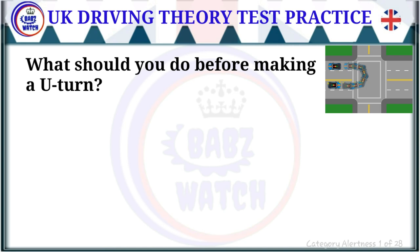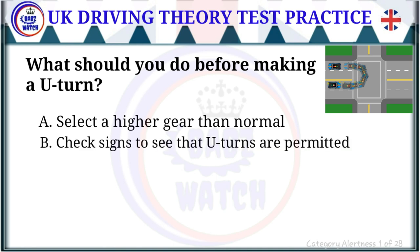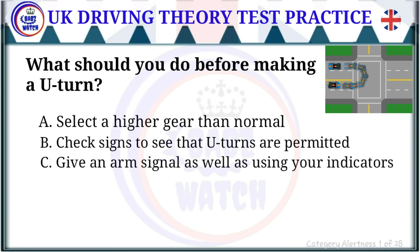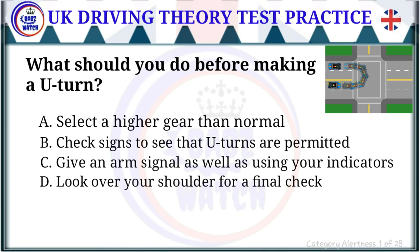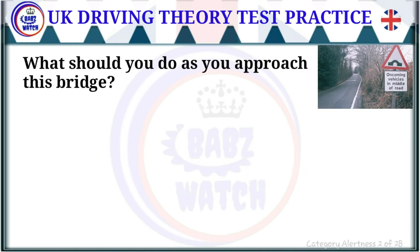Question 1 of 28: What should you do before making a U-turn? The correct answer is: look over your shoulder for a final check. If you have to make a U-turn, slow down and ensure that the road is clear in both directions. Make sure that the road is wide enough for you to carry out the manoeuvre safely.